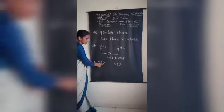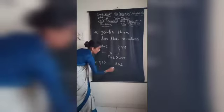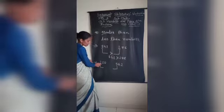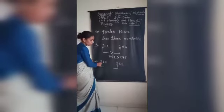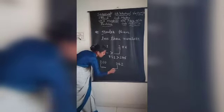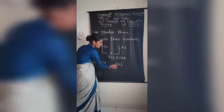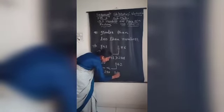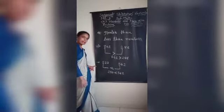Now see the numbers 210 and 562. First compare the hundreds place value digits. Here we have 2 and here we have 5. We know very well that 2 is smaller than 5, so we put the less than sign. Because 2 is smaller than 5, we write the answer as 210 < 562. That is all about greater than and less than numbers.